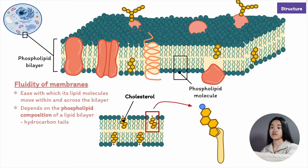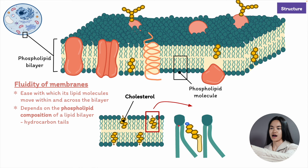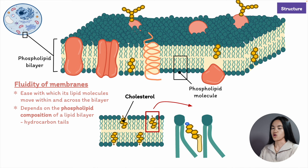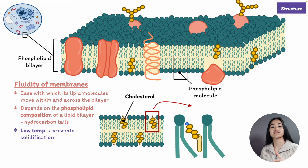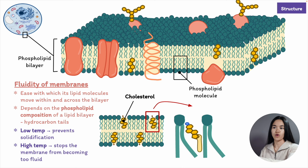Cholesterol fits into the gaps between phospholipids. There's a polar head group, a steroid ring structure, and a non-polar tail. Cholesterol may fill the spaces between these molecules because of its short and rigid steroid ring structure. Cholesterol acts as a buffer for changing temperatures. At lower temperatures, it prevents the plasma membrane from solidifying by restricting phospholipids from packing closely together. At higher temperatures, it stops the plasma membrane from becoming too fluid by restricting the movement of phospholipids — pulling them together. We don't want phospholipids to separate from one another, because it would make the membrane weak and leaky.